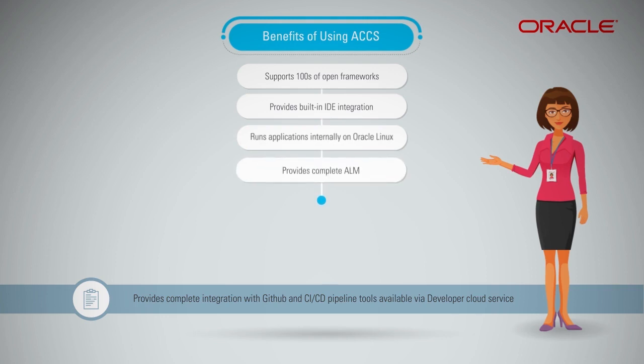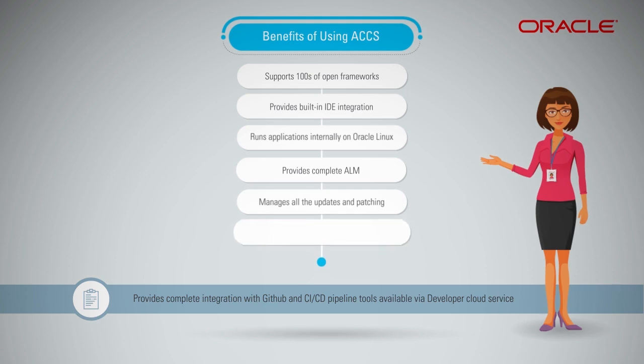ACCS provides complete application lifecycle management (ALM) with its native integration with the Developer Cloud Service. It manages all the underlying OS updates, DB patching, and library updates by Oracle. It also integrates with Caching, Coherence, Developer Cloud, Java Cloud, DBCS, and MySQL CS.